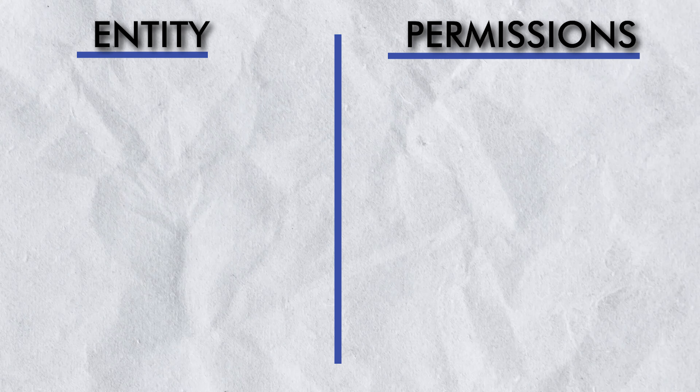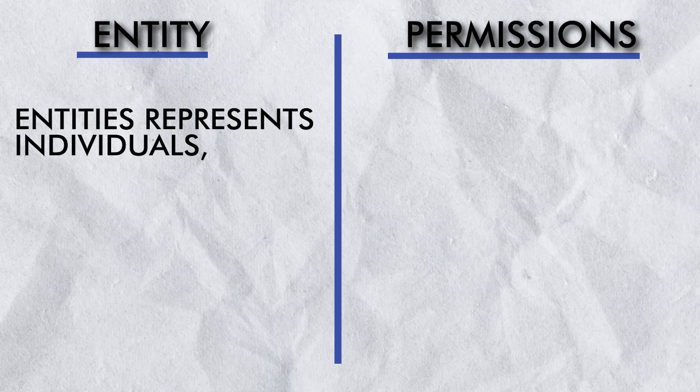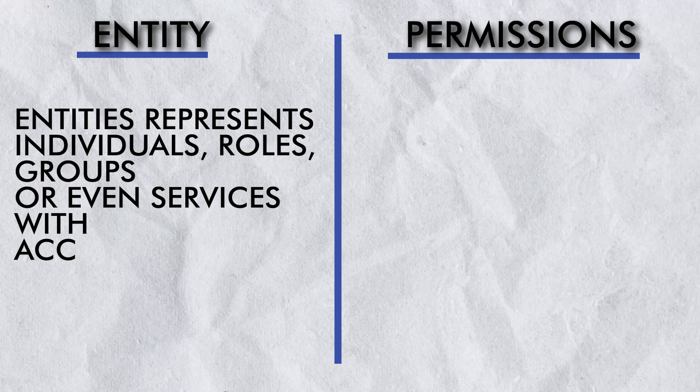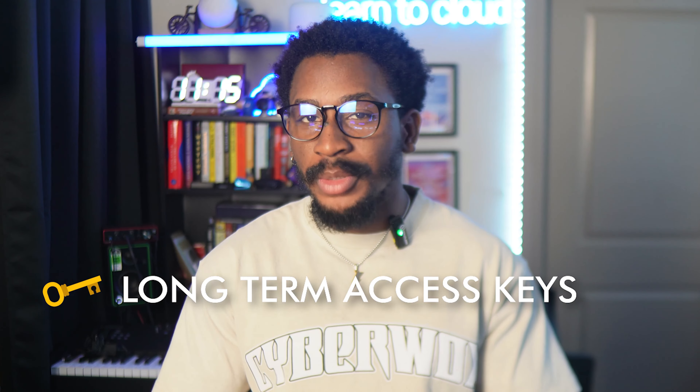At its very core, IAM revolves around two fundamental pieces: the entity and its permissions. Entities represent individuals, roles, groups, or even services with access to your cloud resources. This could be a user like you or me, or even an IAM role. An IAM role allows access to resources and services without the need to use long-term access keys or shared credentials.